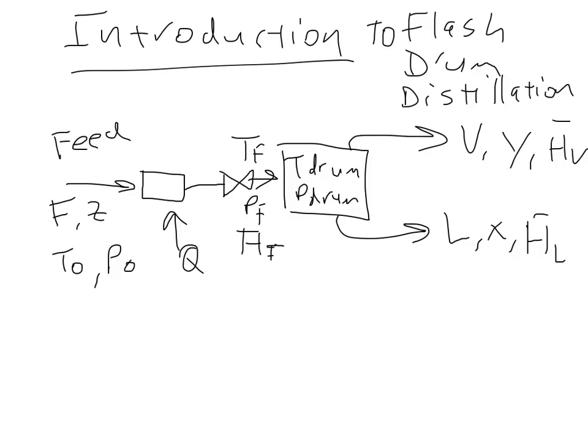We have feed coming in, it's being heated up, we might have some valve to control the pressure. It goes into this drum, some goes off as vapor, some goes off as liquid. Flow rate V, flow rate L, flow rate F, concentration or mole fraction Z of the feed, mole fraction Y in the vapor stage, mole fraction X in the liquid stage. That's basically it.